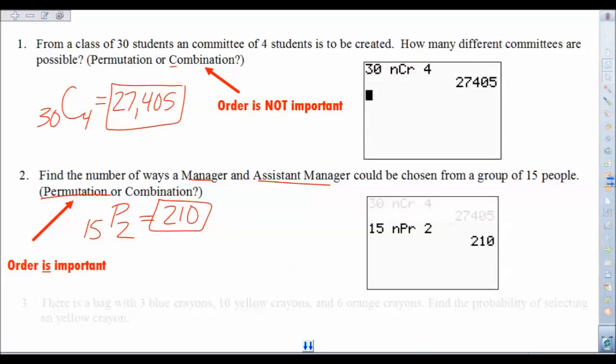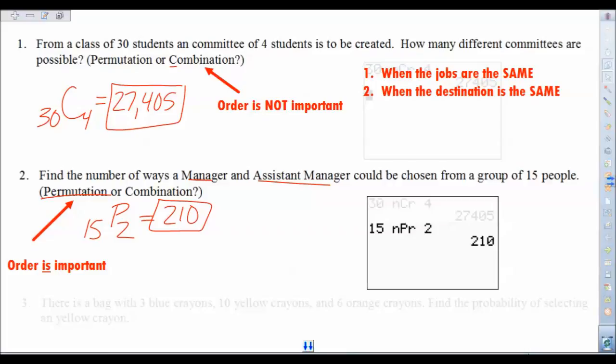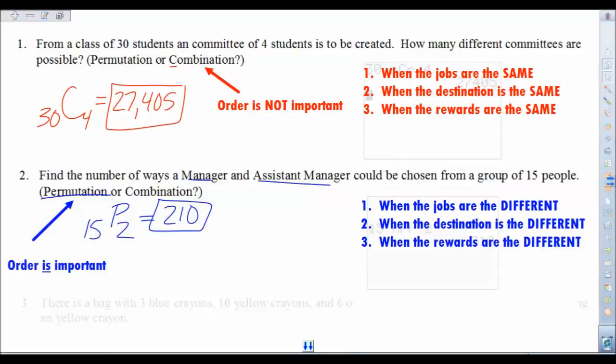So to sum up these two kinds of problems here, when is it going to be a combination, when is it going to be a permutation? Look for these things, clues. Look for these clues when it's for a combination. When the jobs are the same, when the destination is the same, or when the rewards are the same. For permutations, it's when the jobs are different, or the destination is different, or when the rewards are different. Going different places, different rewards like cash prizes, things like that. So that's about as simple as we can put it, in terms of telling the difference.